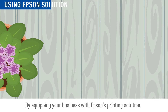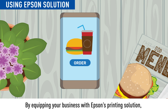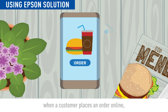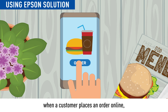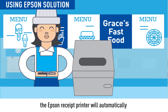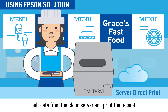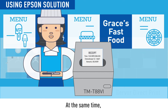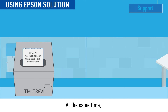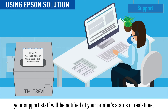By equipping your business with Absinthe's printing solution, when a customer places an order online, the Absinthe receipt printer will automatically pull data from the cloud server and print the receipt. At the same time, your support staff will be notified of your printer's status in real-time.